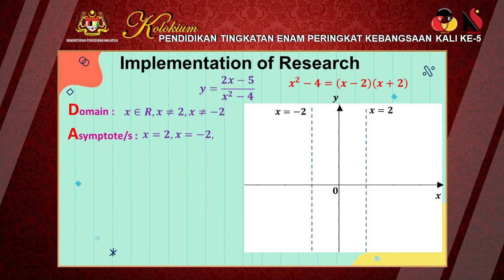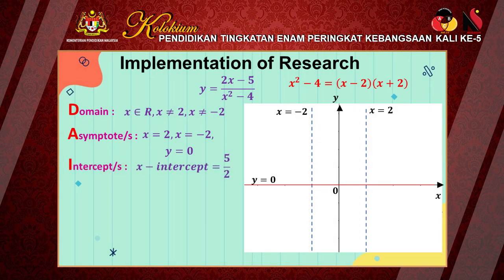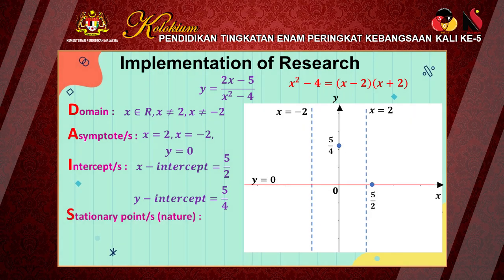Then we need to find whether there is an asymptote for y. For this case, there is one: y equals 0. So draw the line for this asymptote and label it. Then I for intercept — the x-intercept is 5/2. Straight away, mark and label the point on the graph. Next, check whether there is a y-intercept. For this question, the y-intercept is 5/4. Mark and label the y-intercept on the graph. Finally, the letter S which stands for stationary point. The stationary point is (1, −1) — mark and label this point on the graph. There is another stationary point at (−1, 1/4) — mark and label this point on the graph.